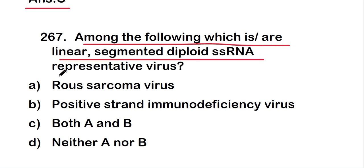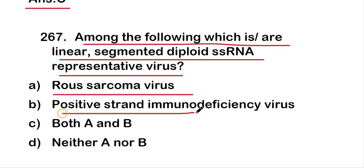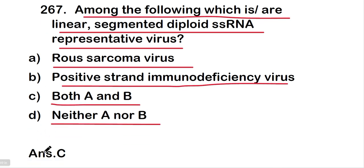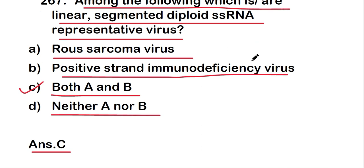The next question: among the following, which is or are linear segmented diploid single-stranded RNA representative virus? The options are Rous sarcoma virus, positive-stranded immunodeficiency virus, both A and B, or neither A nor B. The right answer is option C — both A and B: Rous sarcoma virus and positive-stranded immunodeficiency virus.